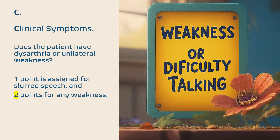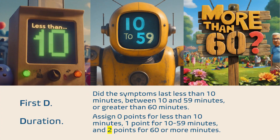C: Does the patient have dysarthria or unilateral weakness? 1 point is assigned for slurred speech and 2 points for any weakness. D: Did the symptoms last less than 10 minutes, between 10 and 59 minutes, or greater than 60 minutes? Assign 0 points for less than 10 minutes, 1 point for 10 to 59 minutes, and 2 points for 60 or more minutes.